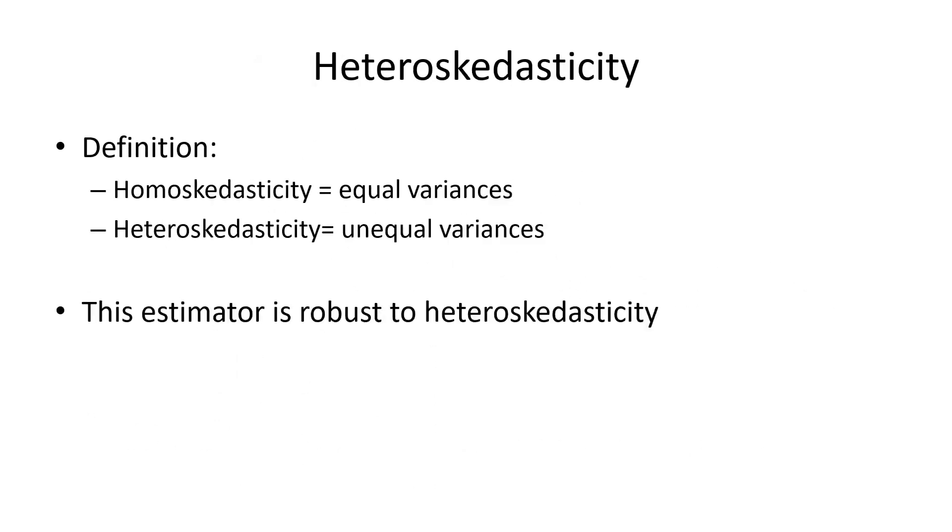Now we have some fancy words. Homoscedasticity refers to equal variances. Homo meaning equal and skedasticity meaning variance. And heteroscedasticity meaning unequal variances. This estimator is robust to heteroscedasticity. Okay, so that's good. Robustness is good.